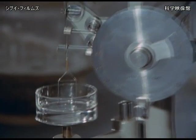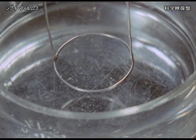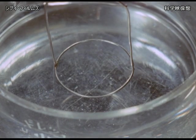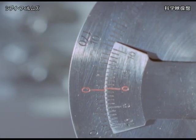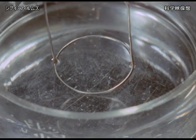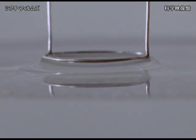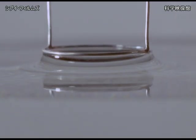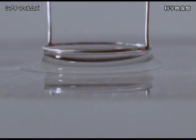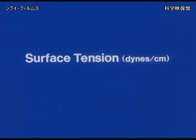Here, the surface tension is being measured using a du Noüy tensiometer. A platinum ring is submerged in the water, then slowly raised. Water is pulled up with the ring because of surface tension. But beyond a certain limit, the weight of the water will exceed the force of surface tension. The value of the surface tension is determined by this limit. It's expressed in dynes per centimeter.